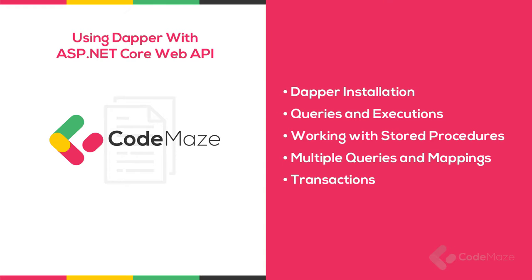We can use Dapper to communicate with the database in our projects. By using Dapper we can write SQL statements as we like to do in SQL Server. Dapper has great performance because it doesn't translate queries that we write in .NET to SQL. It is important to know that Dapper is SQL injection safe because we can use parameterized queries. One more important thing is that Dapper supports multiple database providers — it extends ADO.NET's IDbConnection and provides useful extension methods to query our database.